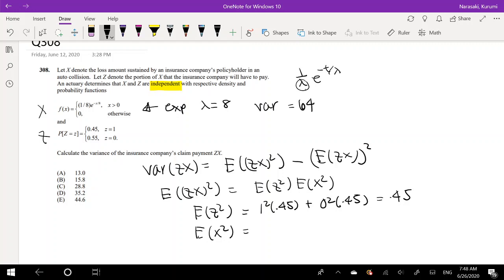But we need the second moment. Variance equals second moment minus the first moment squared. We know the variance is 64.